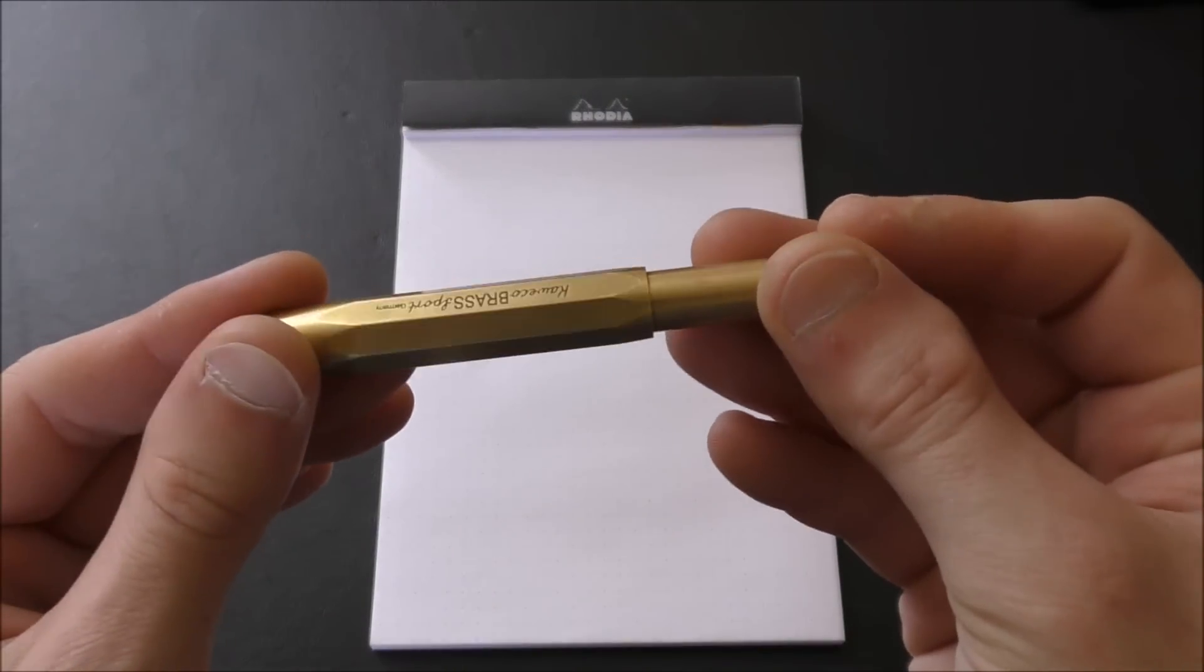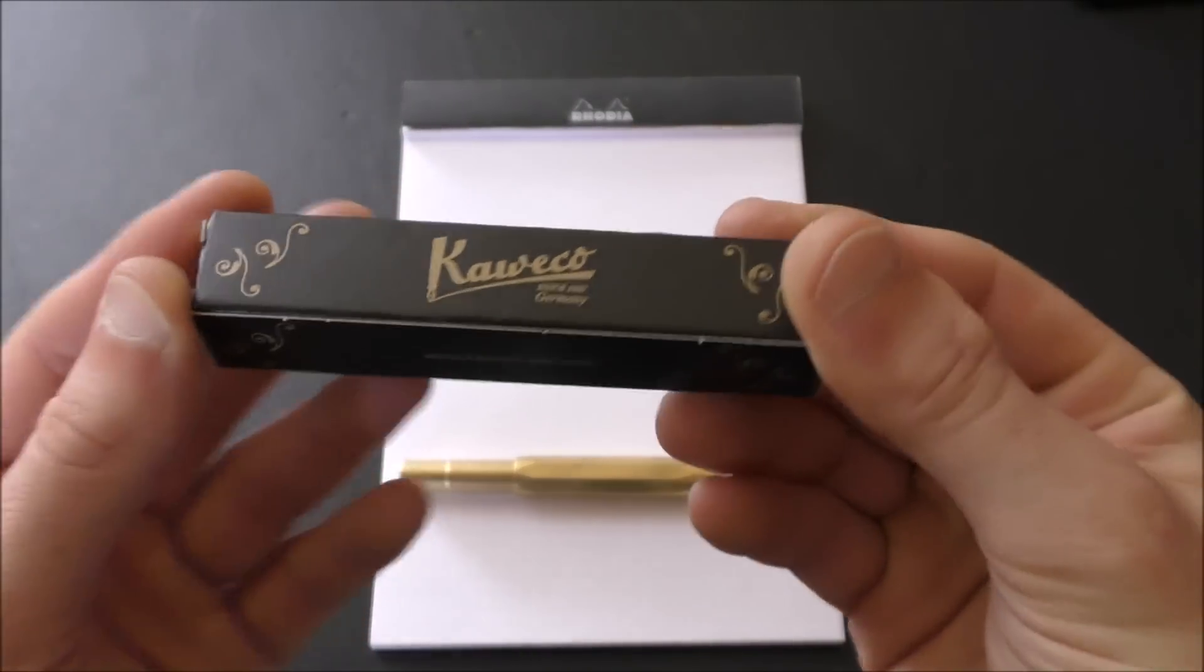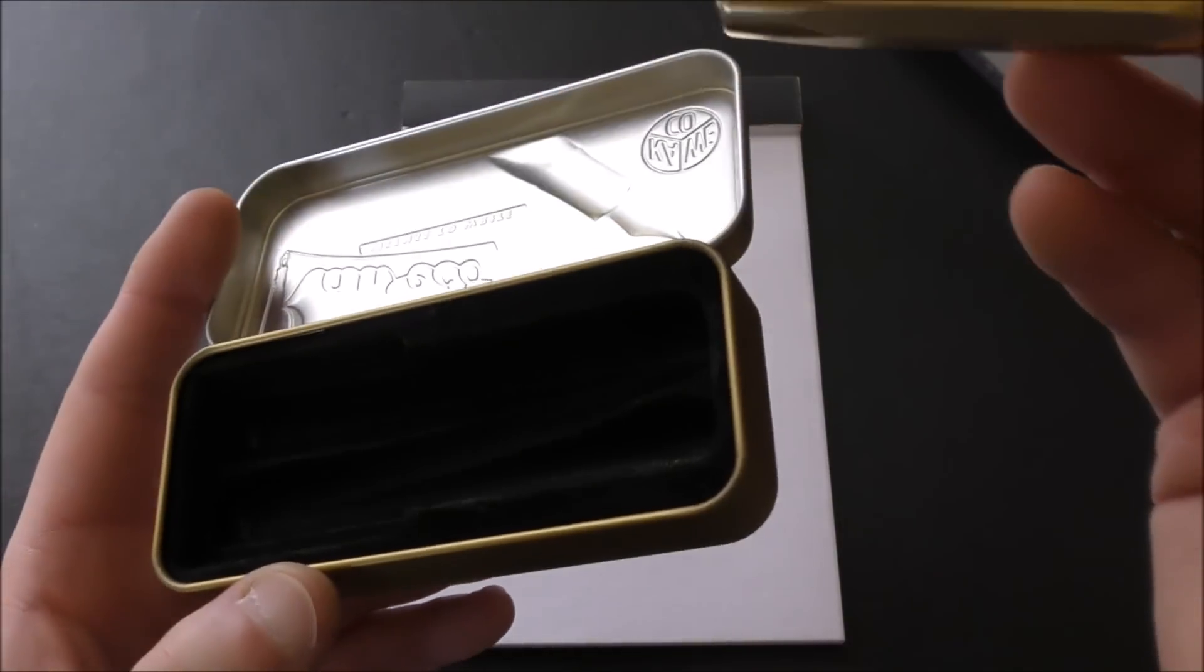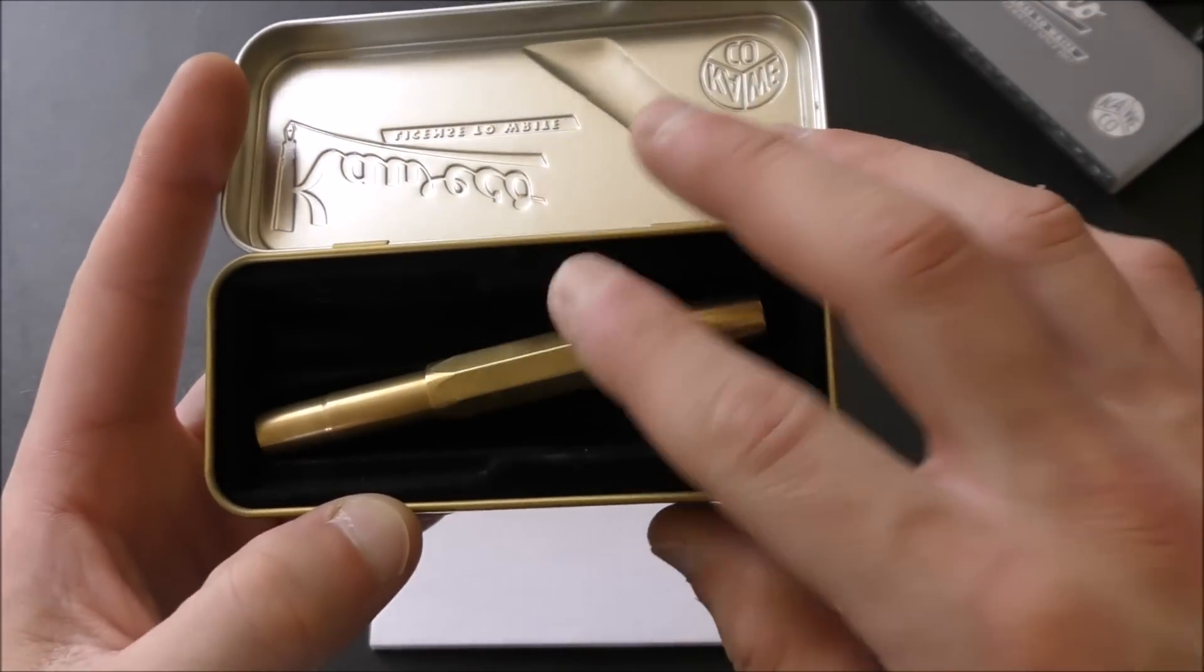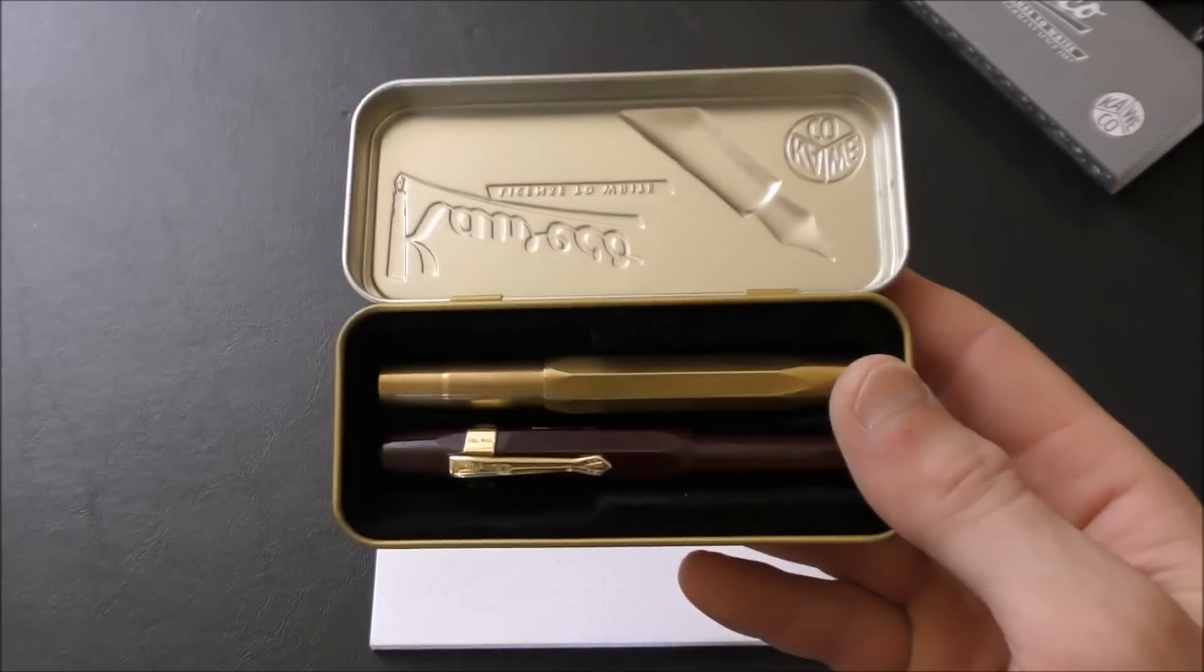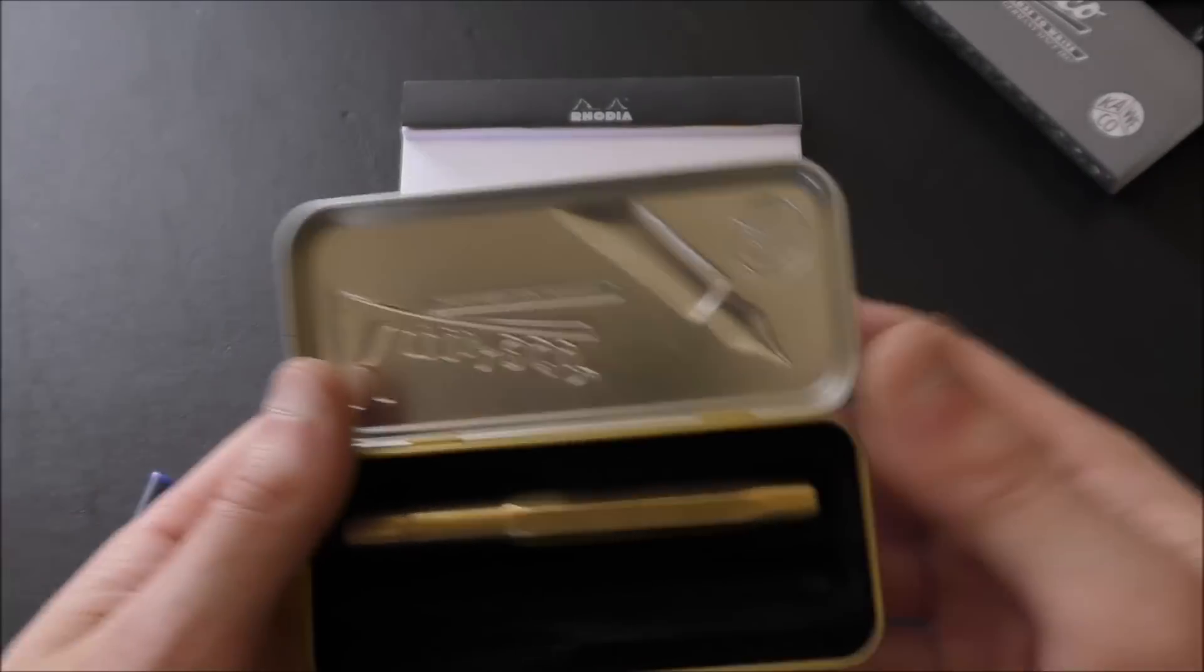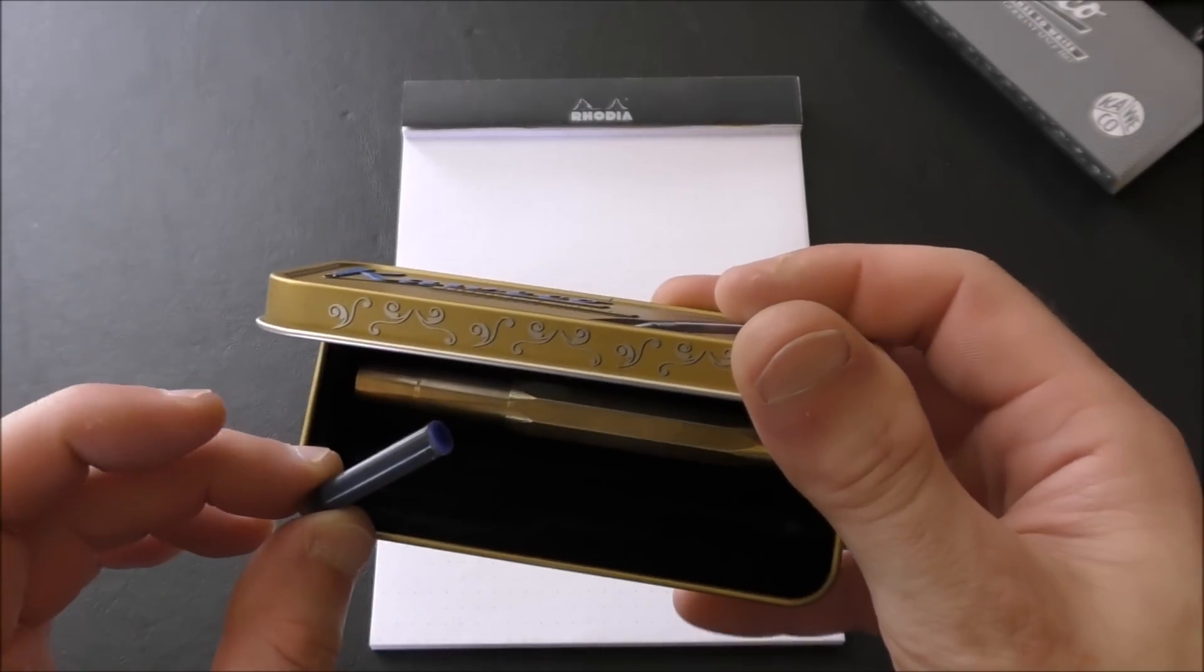Another thing I would like to point out is that this comes packaged much differently than the Classic. The Classic Sport comes in just a little box like this. The Brass Sport comes in a cool little tin, first in a cardstock sleeve, but a neat little tin like this. You can have one pen this way, one pen this way. You actually have room for two pens if you want, like so. And you also have room for cartridges. Just a cool little presentation tin. I think it's nice that if you're paying more for a premium sport, they up the presentation a little bit.